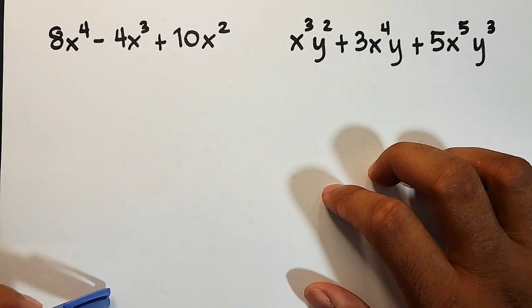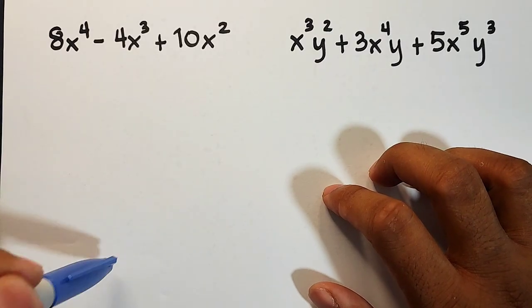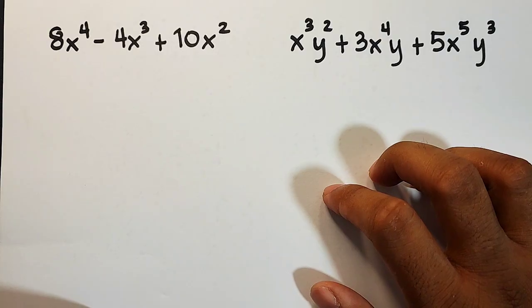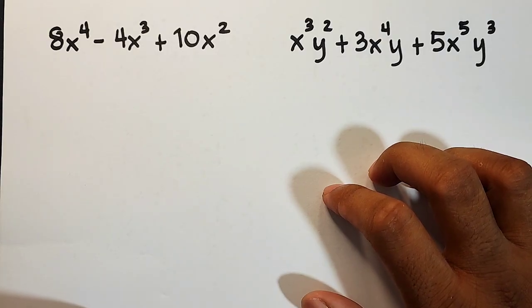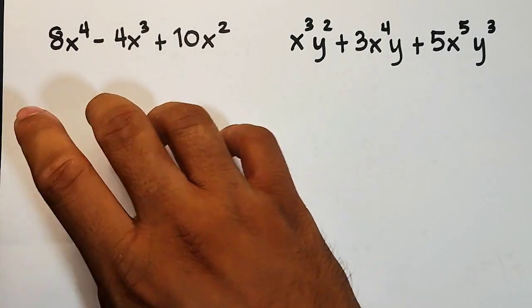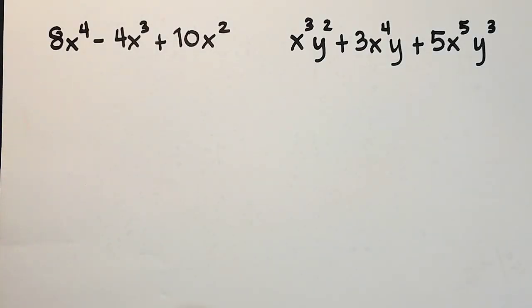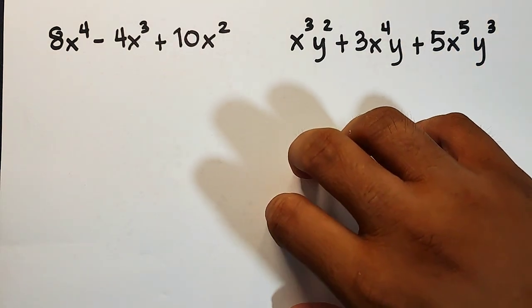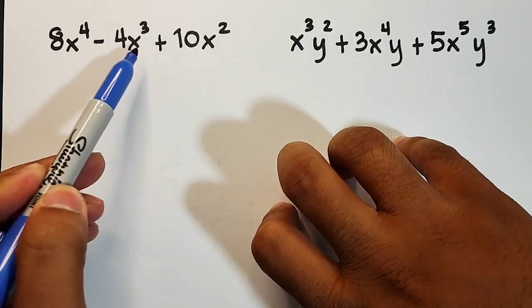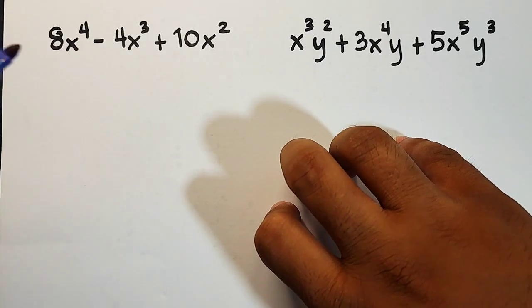As you can see, hindi pwede yung mga factoring techniques like sum and difference of 2 squares, sum and difference of 2 cubes, or perfect square trinomial factoring. Yung pinaka-generic na pwede natin gamitin is common monomial factoring. With common monomial factoring, we'll look for common factors between these three terms.